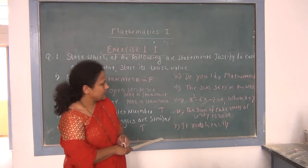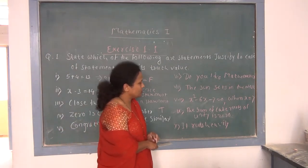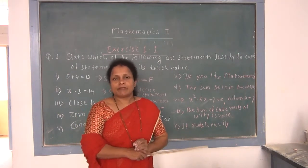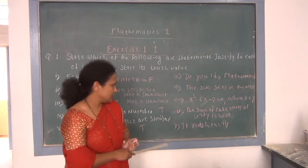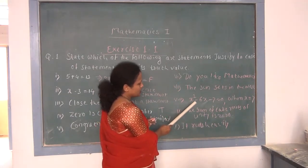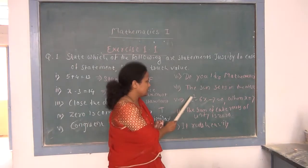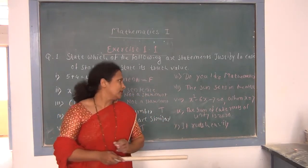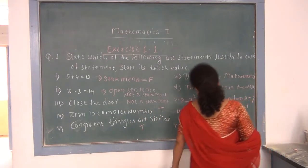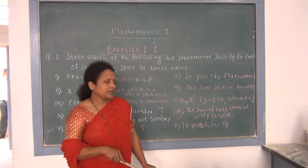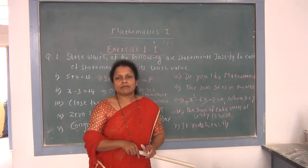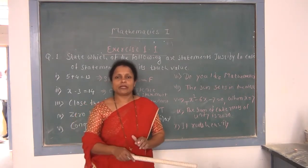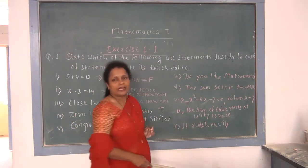Eighth: x² − 6x − 7 = 0 when x = 7. Since the value of x is given, an equation becomes a statement when values of x are specified. Substituting x=7: 49 − 42 − 7 = 0, which is satisfied. So it is a statement and truth value is T. Ninth: 'The sum of cube roots of unity is 0.' The cube roots of unity are 1, ω, and ω², and 1 + ω + ω² = 0. So it is a statement and truth value is T.